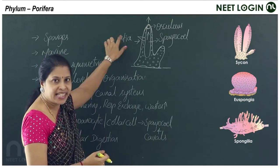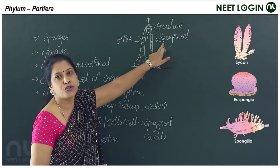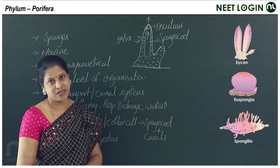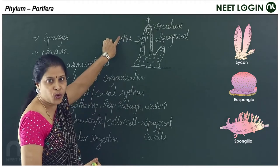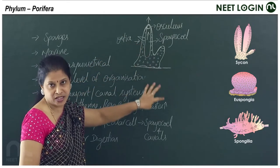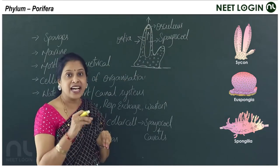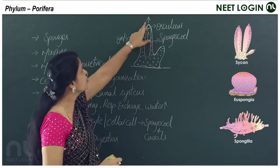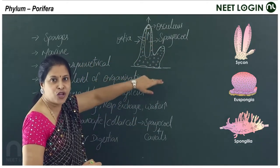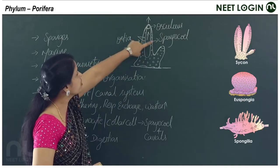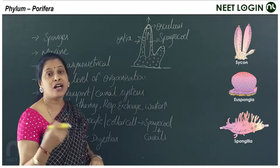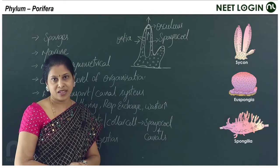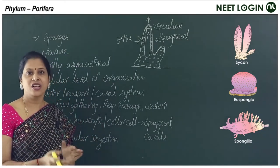Water enters into a cavity called the spongocoel — the cavity of the sponge. Water enters through ostia into the spongocoel and leaves through the exhalant aperture called the osculum. Oscula are very few, but ostia are numerous.